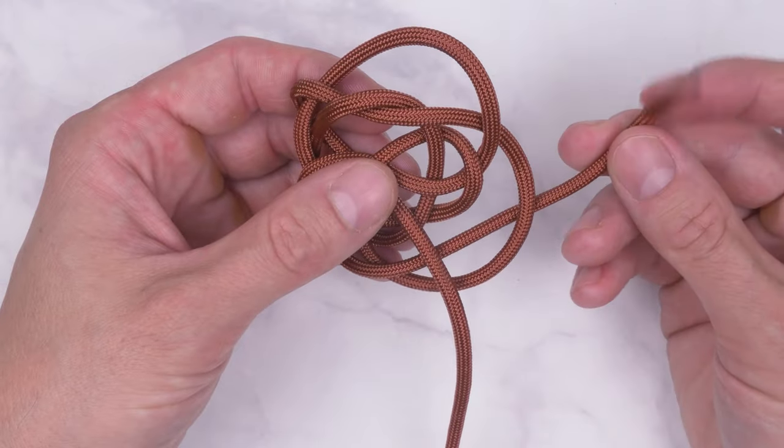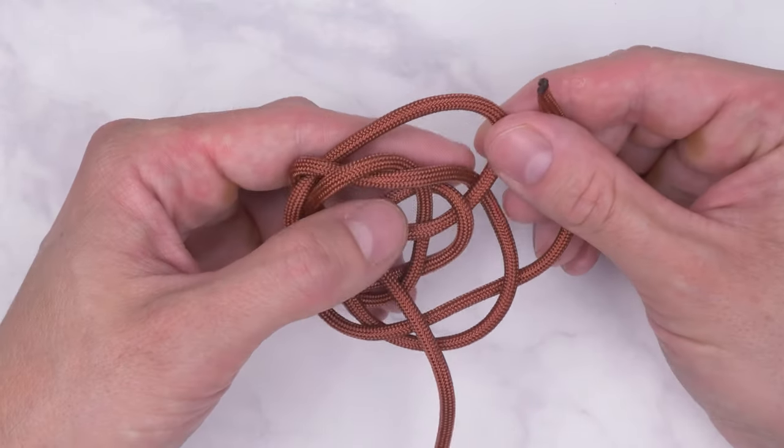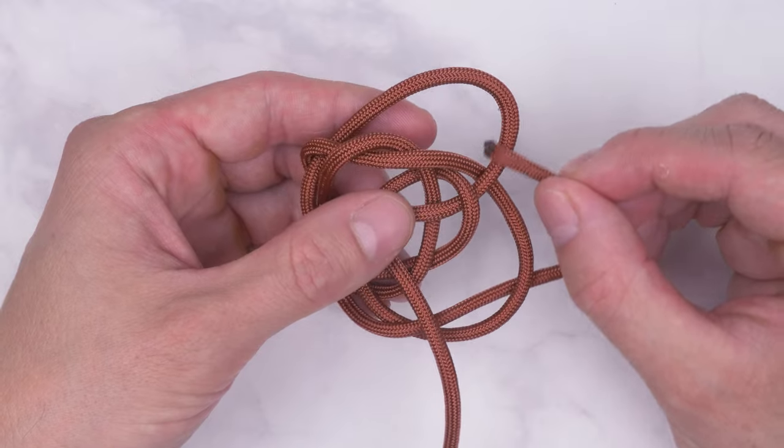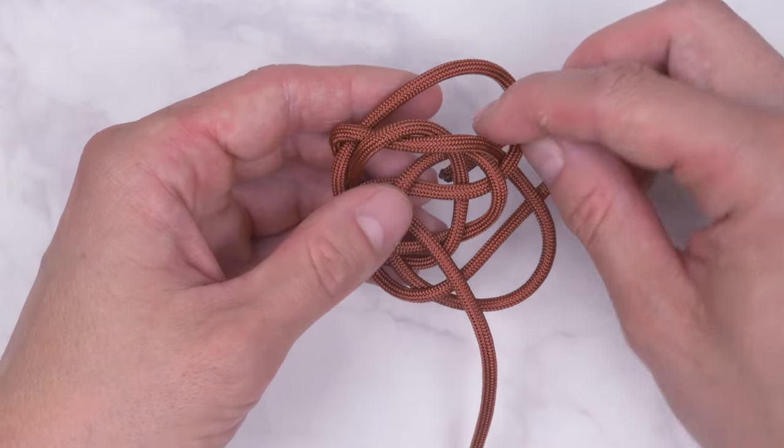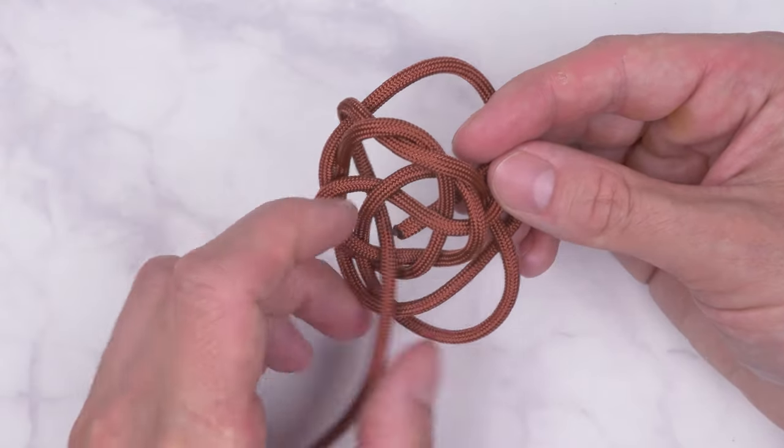With the other end, we pass over this part of the loop, then through the center of the carrick bend.